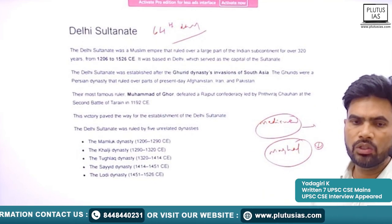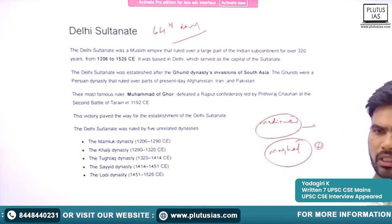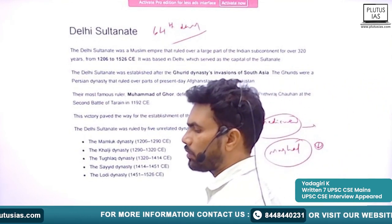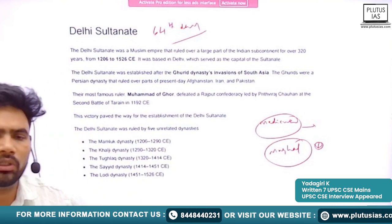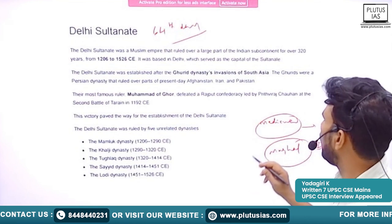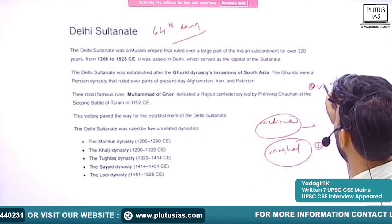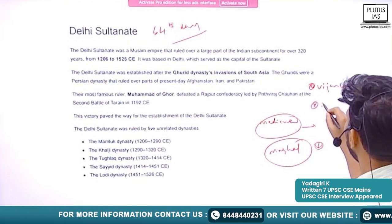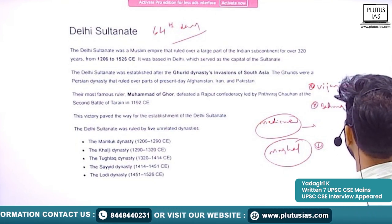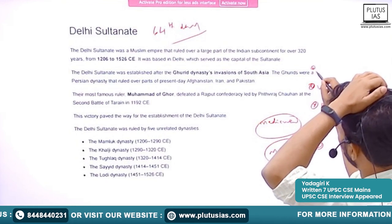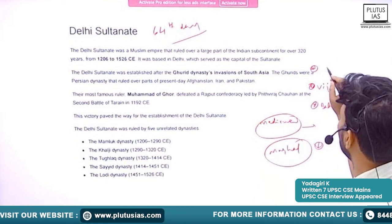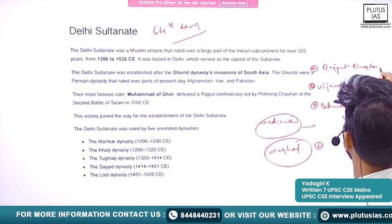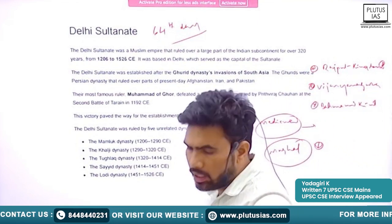These dynasties are there, especially the regionally dominated dynasties, but I am not going to cover them. From your side, try to cover them. Try to know some details about these regional dynasties. Especially two are very important: one is Vijayanagara Empire, and the second one is Bahmani Kingdom. If you are interested, you can also study about the Rajput Kingdoms. Rajputs also play a very important role during the medieval period.